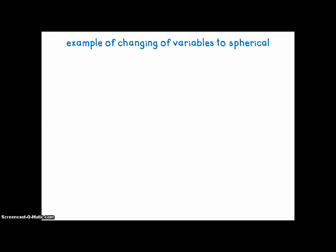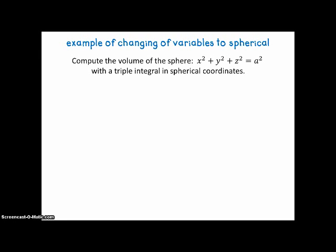So now we're going to look at a very simple example. And then if you ever need to do a more complicated one, you'll have the tools you need. Just to show you this really does work. Compute the volume of the sphere x squared plus y squared plus z squared equals a squared with a triple integral in spherical coordinates. Now we already know that this volume should be what? If the radius is a, what's the volume of the sphere? Well, it's 4 thirds pi a cubed. So we're going to show that the triple integral does give us the correct answer.